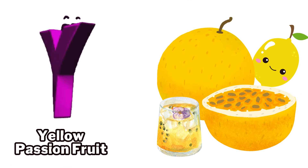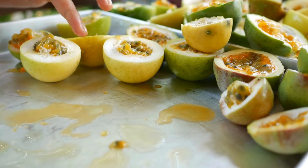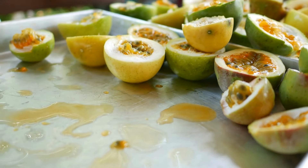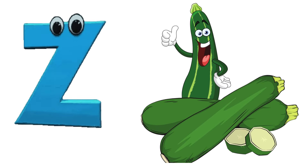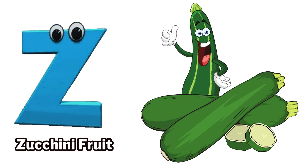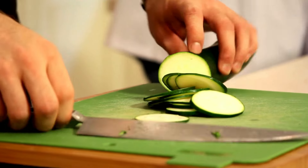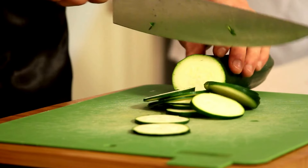Y is for yellow passion fruit, y-y-yellow passion fruit. Z is for zucchini fruit, z-z-zucchini fruit.